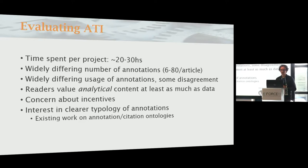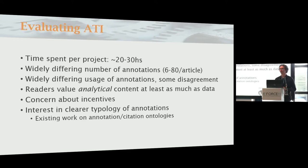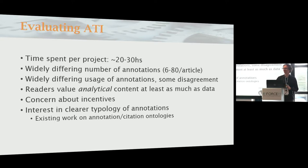Some of the first experiences: the time people spent annotating per project was roughly 20 to 30 hours with significant variance on either side. There was a widely varying number of annotations. Some people put just six annotations on their articles — we felt that if you have that few, the annotations add very little value and you can just put them in an appendix. Some people put 80 or 87. That gets a little crowded — everything highlighted in yellow in your article. So there's probably some Goldilocks amount somewhere in the middle.